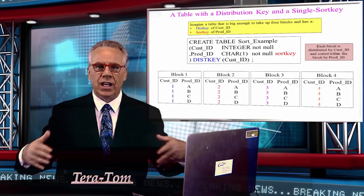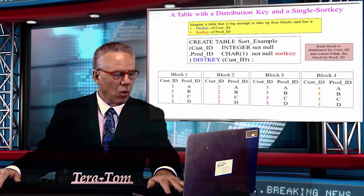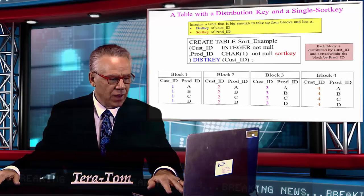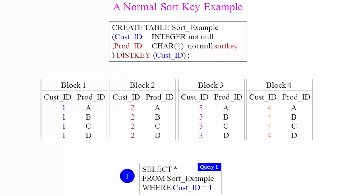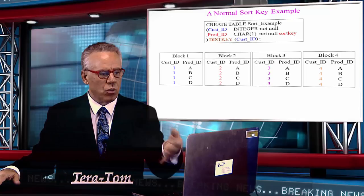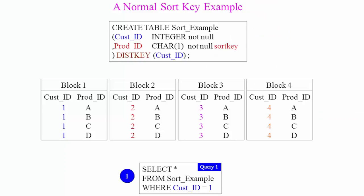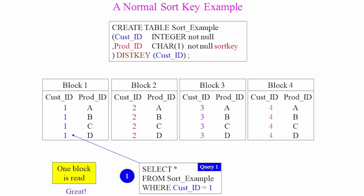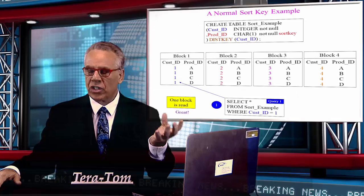Now, we're going to take this a little bit different here. This is another look at it. As you can see, we have our same table with our blocks, ABCD. In example one, we say select everything from sort example where cust ID equals one. The good news is that was our distribution key. The system knows that there's only one slice with cust ID ones. Only one block moves into memory.